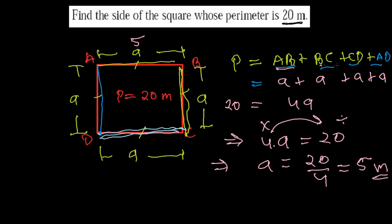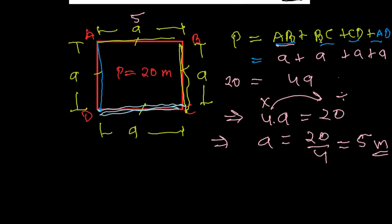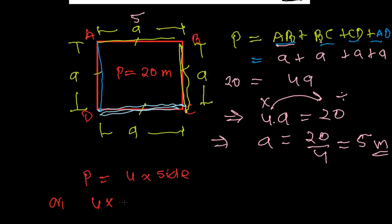A quick method: the perimeter of a square equals 4 times the side. We are given that the perimeter is 20 meters, so perimeter = 4 × side = 20.